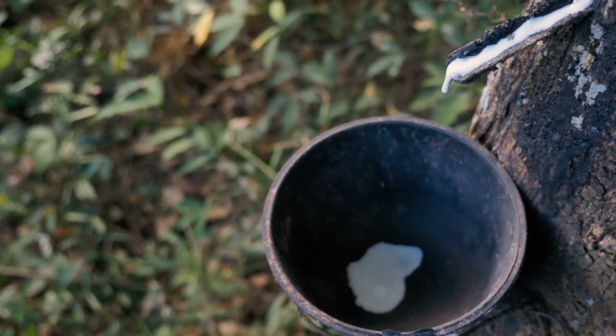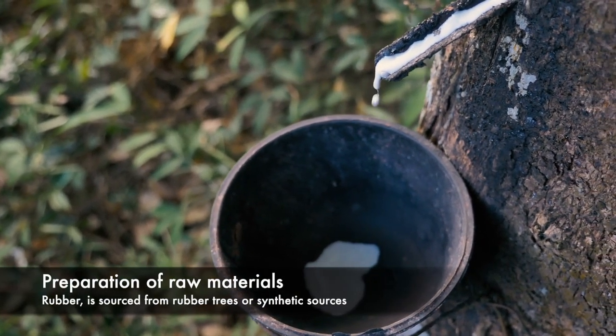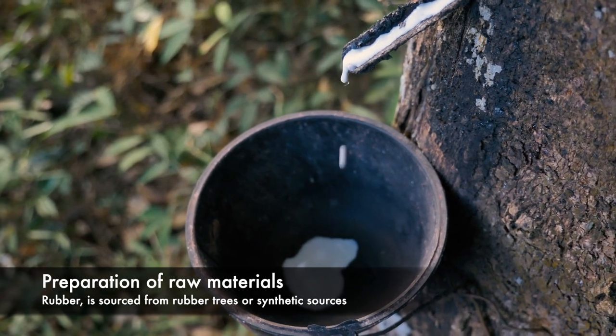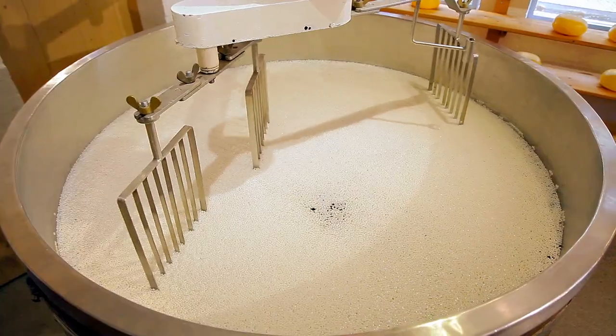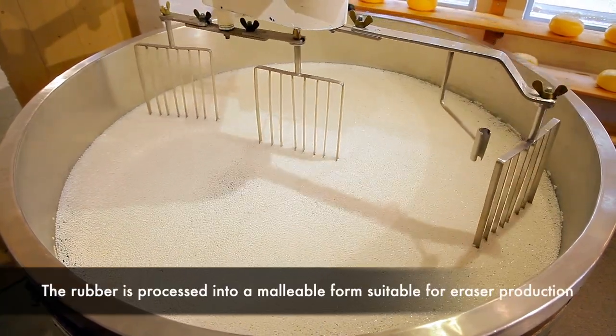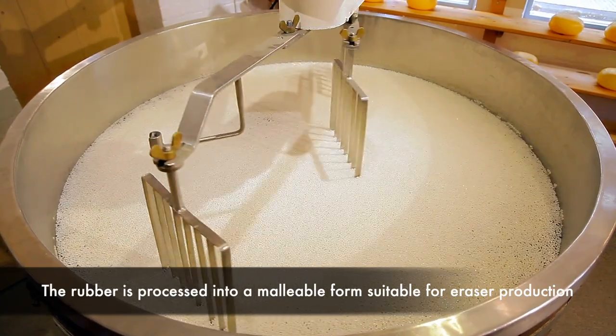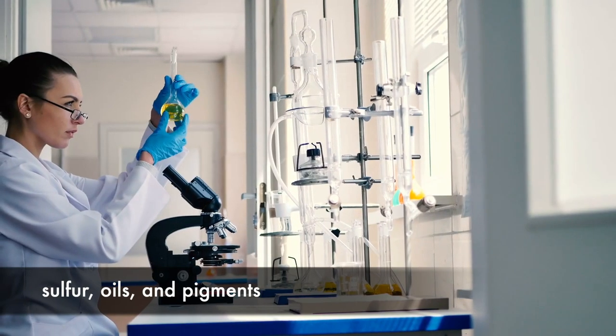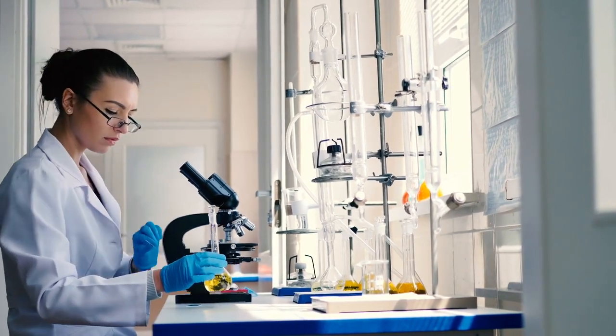The first step in eraser production involves the preparation of raw materials. The primary ingredient, rubber, is sourced from rubber trees or synthetic sources. Once obtained, the rubber is processed into a malleable form suitable for eraser production. Additives such as sulfur, oils, and pigments are carefully measured and mixed to create the desired eraser properties.